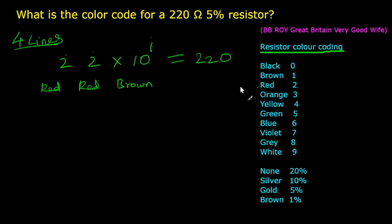The last digit is for tolerance value. From the color code table, color for 5% is gold. So the answer is red, red, brown, gold.